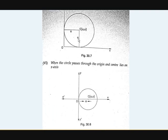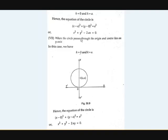This is the picture for the fifth case. Now the sixth case: when the circle passes through the origin and the center lies on the x-axis. If the center lies on the x-axis, the y-coordinate will be 0 and the x-coordinate will be a, so k equals 0 and h equals a. The equation becomes x minus a whole square plus y minus 0 whole square equals a squared. The a squared of x minus a whole square cancels with a squared, leaving x squared minus 2ax plus y squared equals zero, so the equation is x squared plus y squared minus 2ax equals zero.